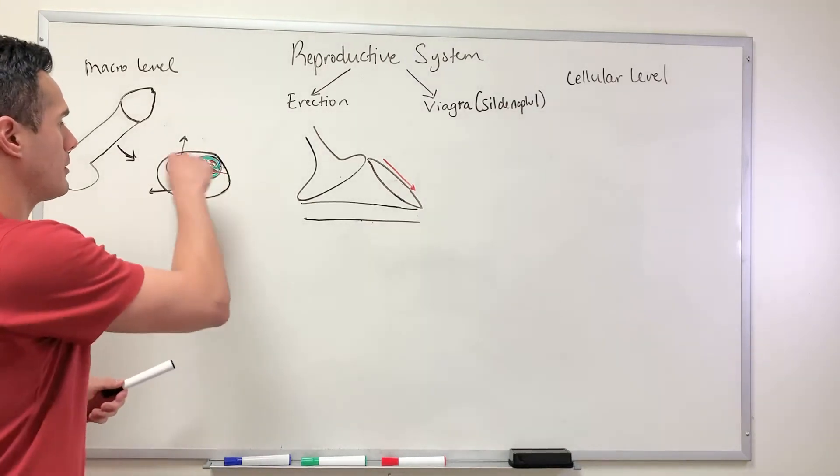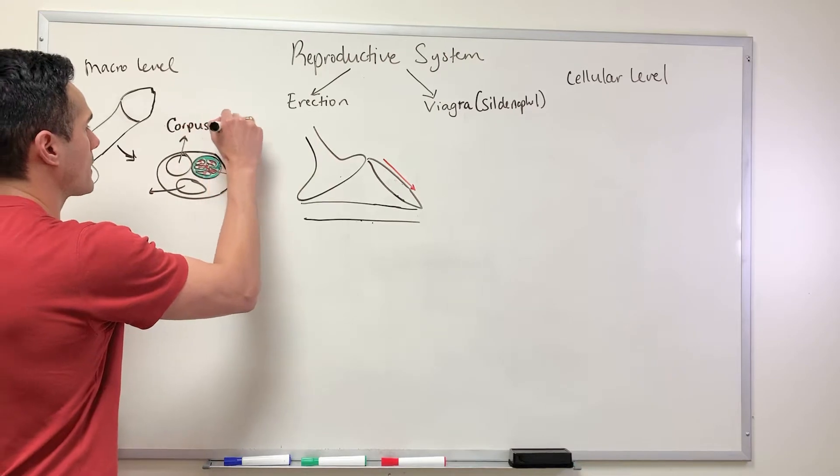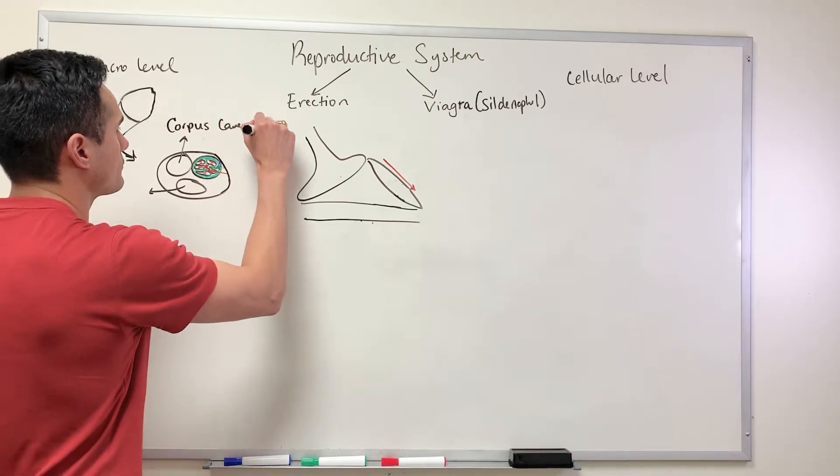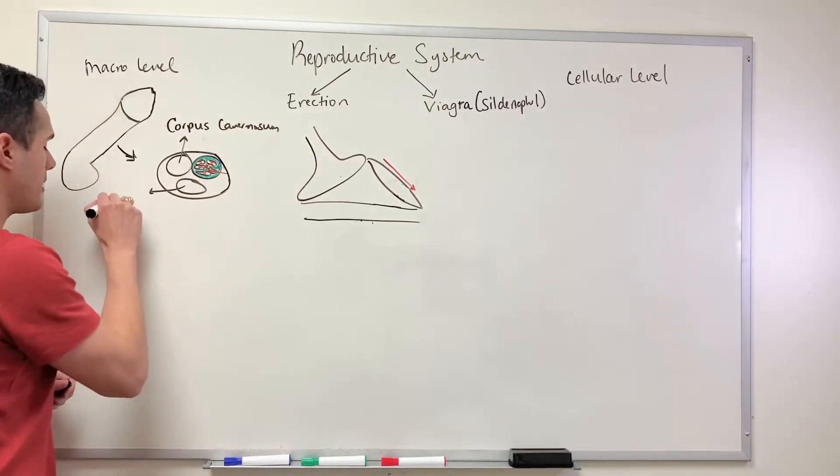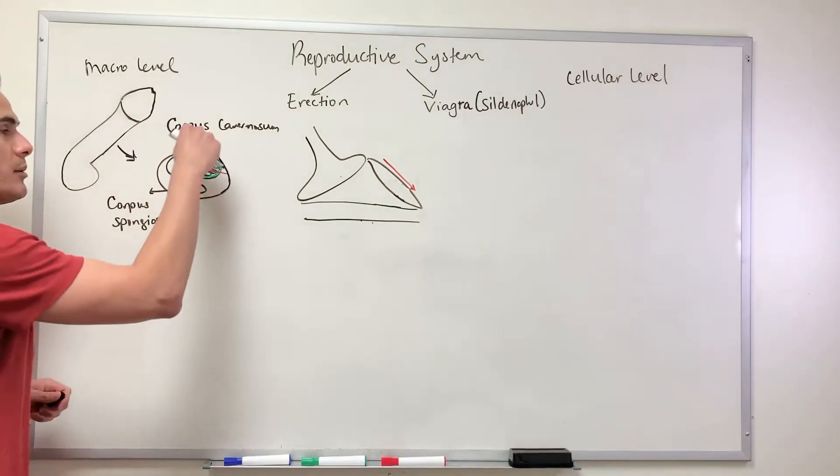Some of the main structures here within the cross-section of the penis: at the top here is the corpus cavernosum, and at the bottom is the corpus spongiosum. During an erection, blood is going to be flowing through this blood vessel here.